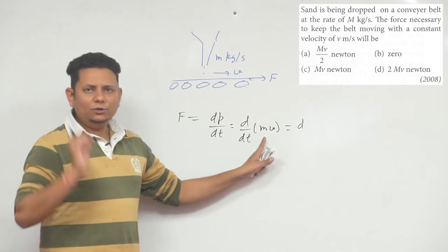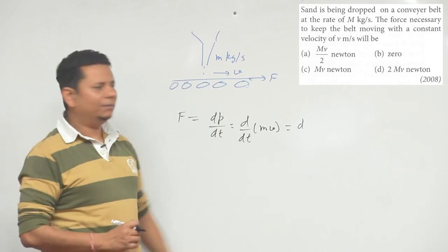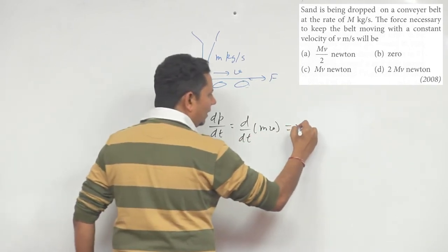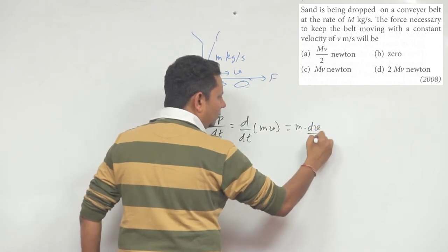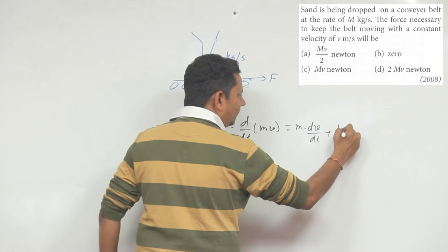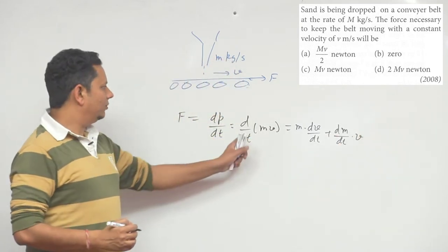...v are both variables. So we'll write this as: first keep m constant and differentiate v, which gives m dv/dt, plus differentiate m to get dm/dt multiplied by v. This is how we can write our force, so this is your force value.